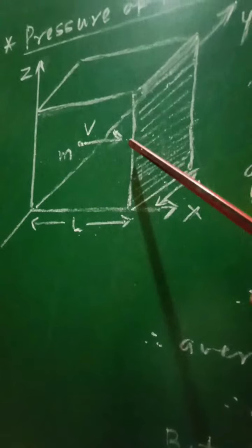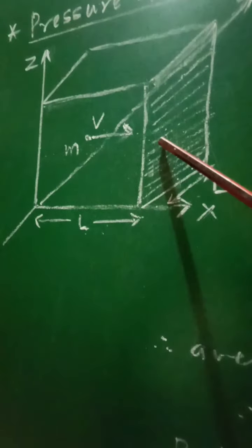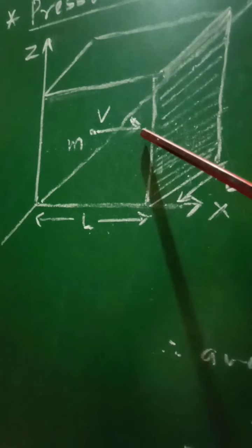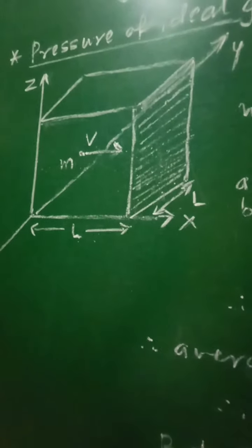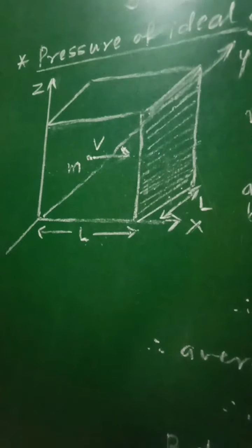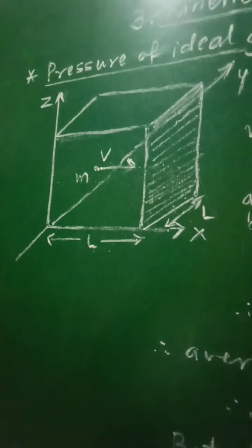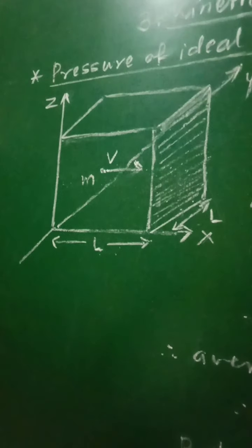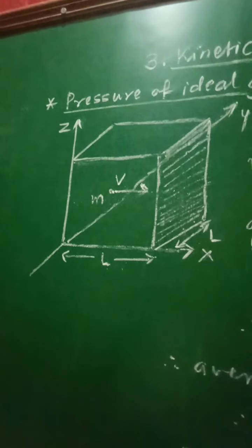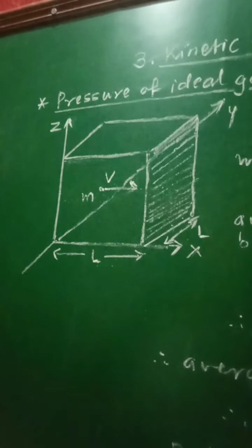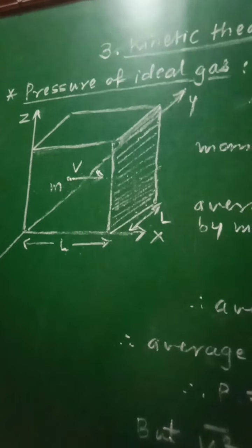Now after collision, the x-component of velocity vₓ will be reversed and taken as negative. As it is traveling along the positive direction, vₓ is taken as positive; when rebounding in the opposite direction it is taken as negative. Hence the component vₓ of the velocity gets reversed, keeping the components along y-axis and z-axis, vy and vz, unaltered.